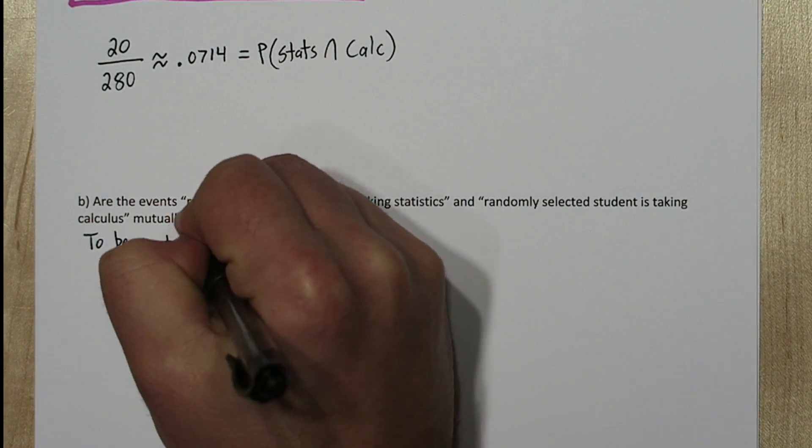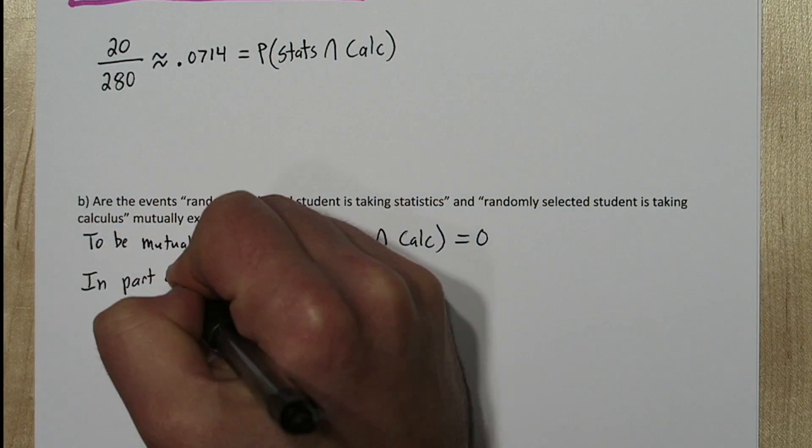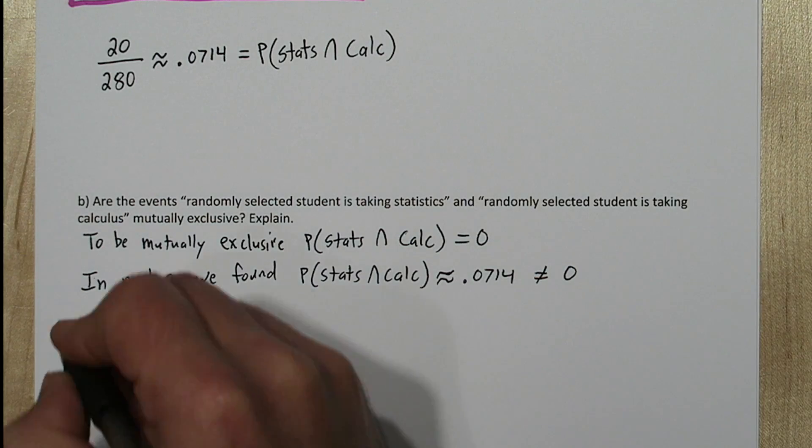To be mutually exclusive, the probability of taking stats and calculus has to equal zero. But in part A we found that probability was about .0714. So not zero.